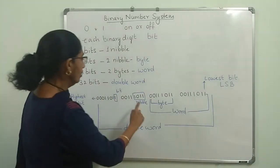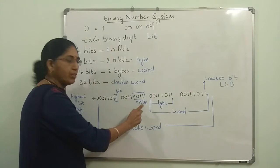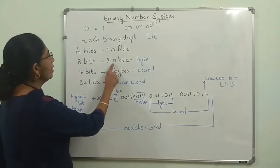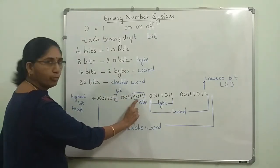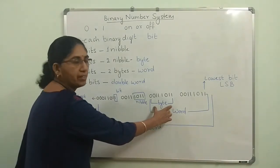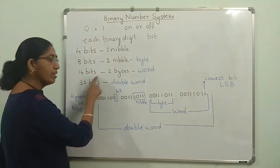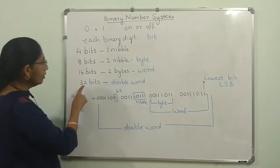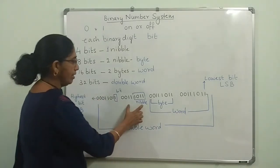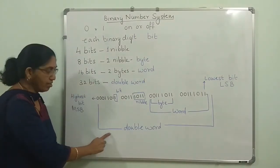A combination of four bits — four single units together — is called a nibble. If I have two such units, that means two nibbles or eight bits, it will form a byte. Eight elements together is called a byte. If I have sixteen elements — sixteen bits — I will have two bytes, or it is called a word. If there are thirty-two bits, eight groups of four give thirty-two, which corresponds to a double word.